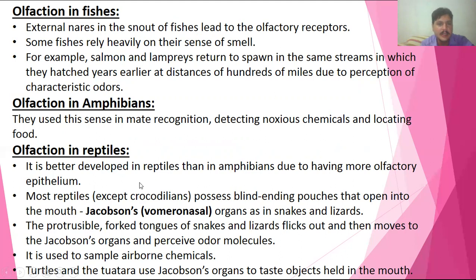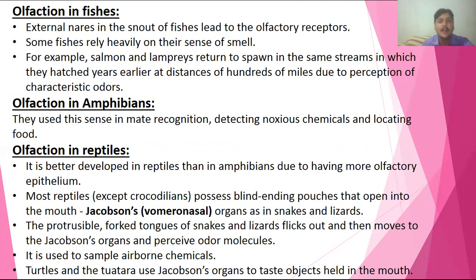Most reptiles, except crocodiles, possess blind-ending pouches that open into the mouth — these are called Jacobson's organs or vomeronasal organs. They are present in snakes, lizards, and most reptiles except crocodiles. This is an important MCQ point: Jacobson's organs are especially present in snakes and lizards.